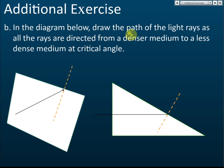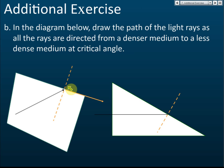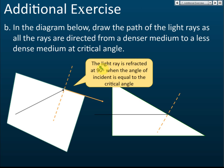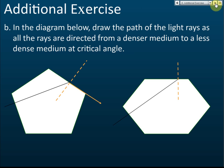In another exercise, draw the path of light rays directed from a denser to a less dense medium at the critical angle. At the critical angle, the refracted ray travels at 90 degrees — parallel to the boundary plane. This applies to all the cases shown. When the angle of incidence equals the critical angle, the refracted ray exits at 90 degrees, parallel to the surface.